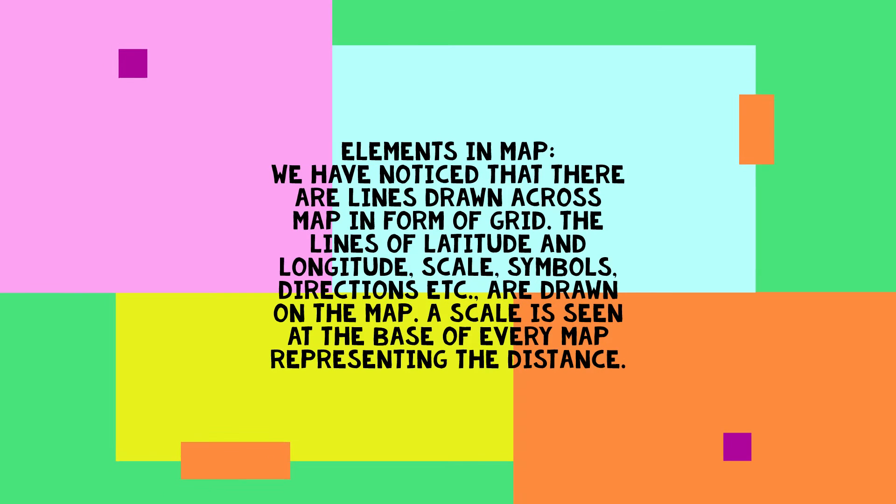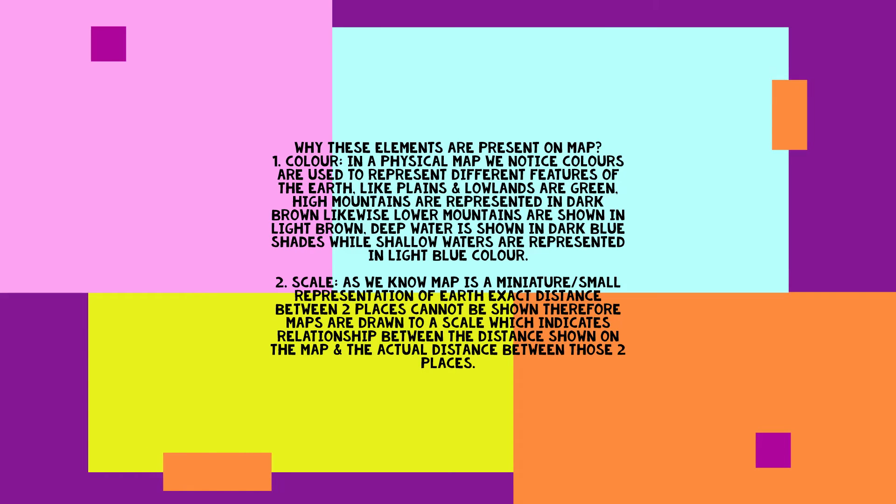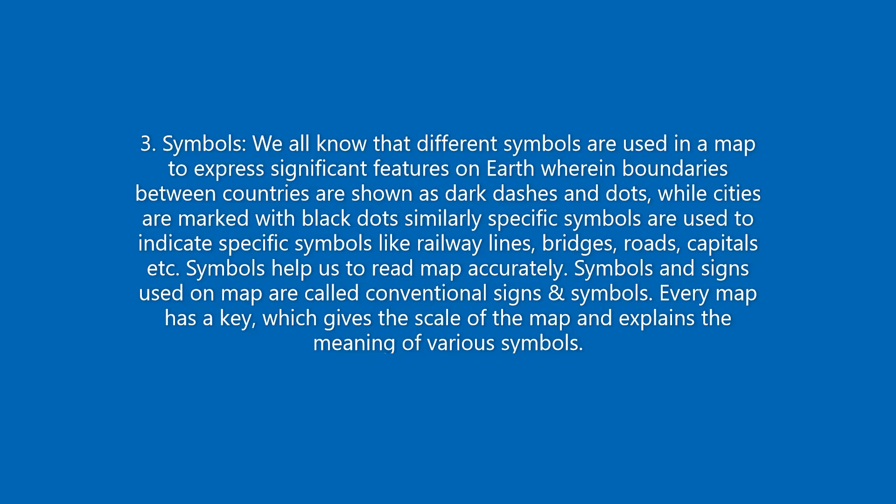Different symbols are used in a map to express significant features on Earth, wherein boundaries between countries are shown as dark dashes and dots, while cities are marked with black dots. Specific symbols are used to indicate features like railway lines, bridges, roads, capitals, etc. Symbols help us to read a map accurately. Symbols and signs used on a map are called conventional signs and symbols. Every map has a key which gives the scale of the map and explains the meaning of various symbols.